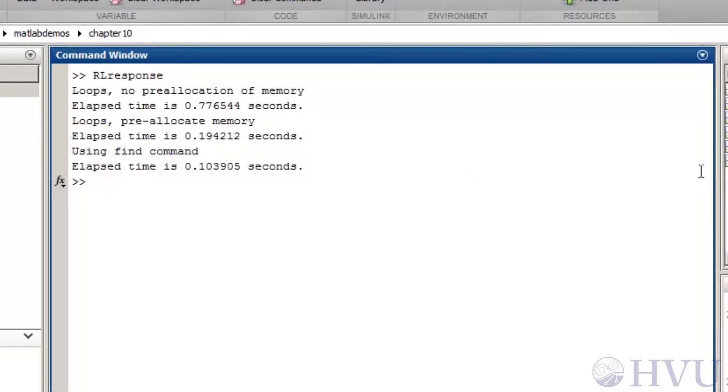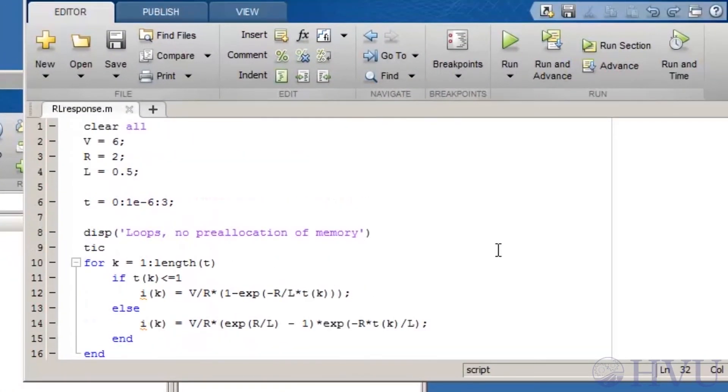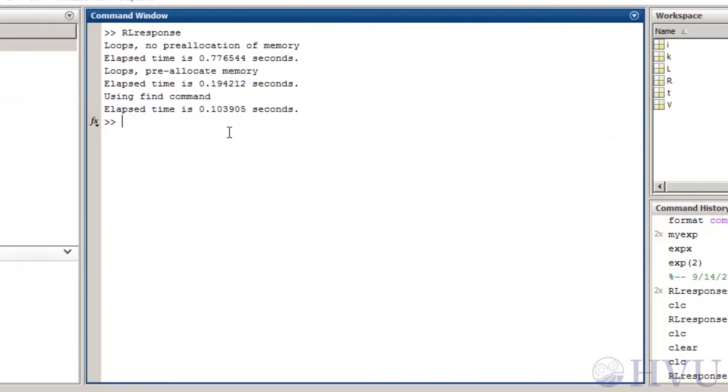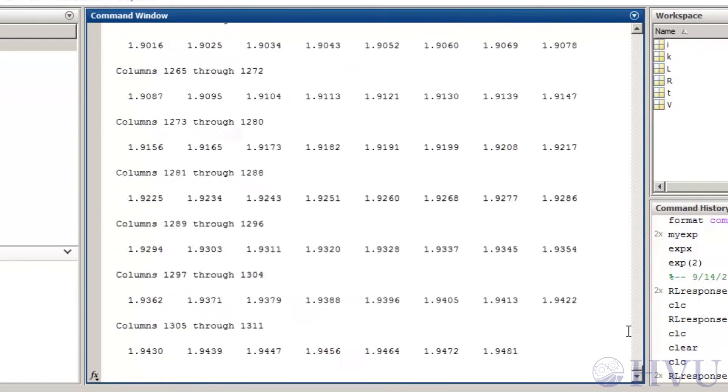Finally, I'll take a look at how much time is required if I display the values of current while they're being calculated. This will have a pretty drastic effect, so I'm going to reduce the number of points calculated by changing the time between points to 2 times 10 to the minus 4. So this time around, I'm going to cut the number of points by about a factor of 200. Now I'll take the semicolons out of the calculation of current in the first method. When I run the code, a bunch of numbers start scrolling past. Let's take a break while this is running because it's going to take a while.